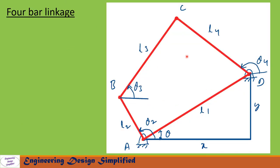In this picture shown is a 4-bar linkage whose fixed link AD is at an angle theta from the horizontal. The fixed link length is L1, horizontal length is X, and vertical height is Y. This link is the crank, whose length is L2 at angle theta 2 from horizontal. Similarly, the coupler has length L3 at angle theta 3 from horizontal, and the follower link has length L4 at angle theta 4 from horizontal.